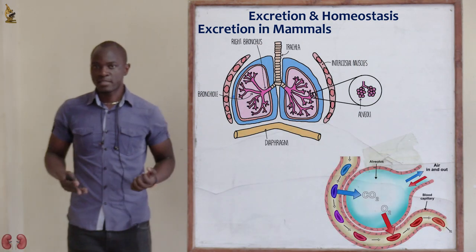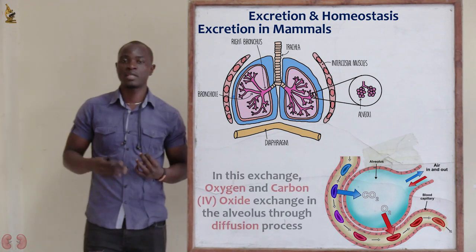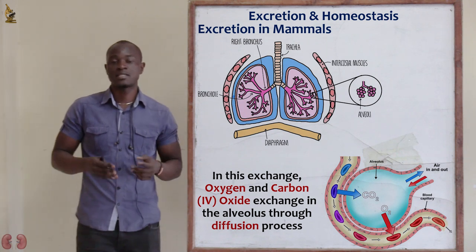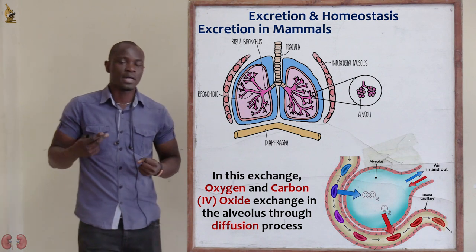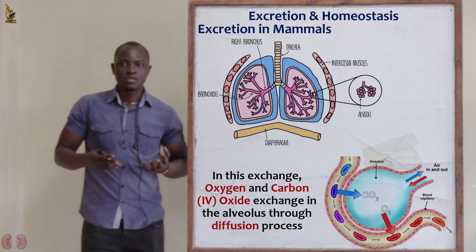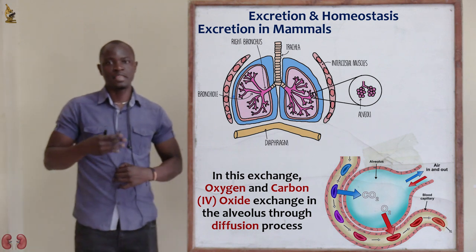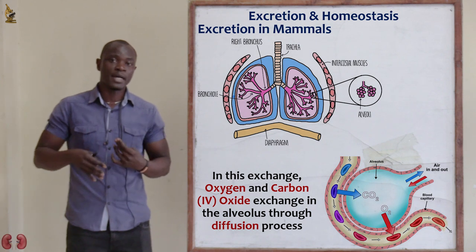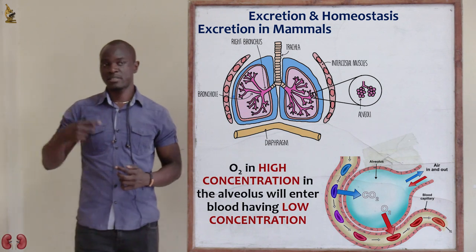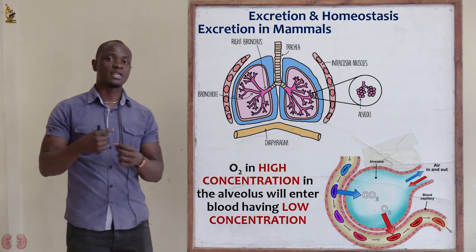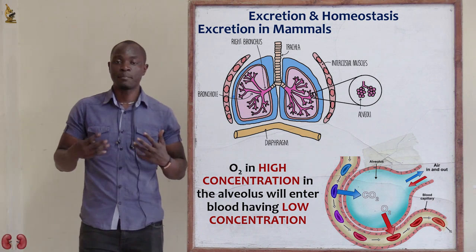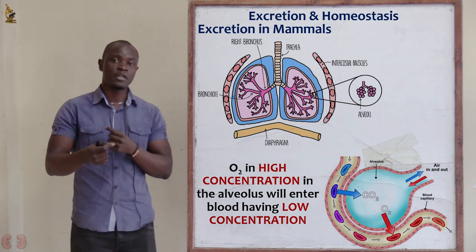Lungs are found in mammals, birds, reptiles, and amphibians. The lungs contain air sacs called alveoli, which are made up of thin elastic epithelium mainly composed of capillaries. In these capillaries, respiratory gases — carbon dioxide and oxygen — exchange through the process of diffusion.